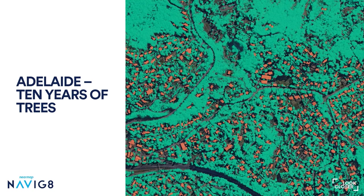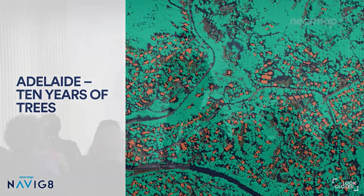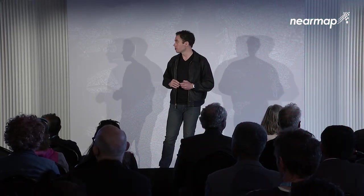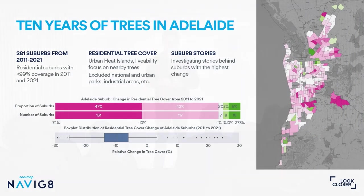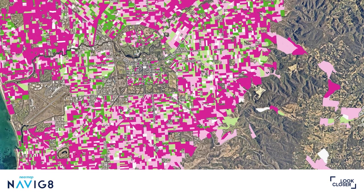We're going to jump into the time machine now. We're going to look at Adelaide, just one city but over the course of 10 years. You can see 281 suburbs where we had data in both 2011 and 2021, focusing on residential tree cover for those heat island type effects. The median suburb drops by about 9.8% relative residential tree cover. On the right you can see the map — the deeper pink suburbs are the ones that lost the most trees, and the greener suburbs are the ones that gained the most.